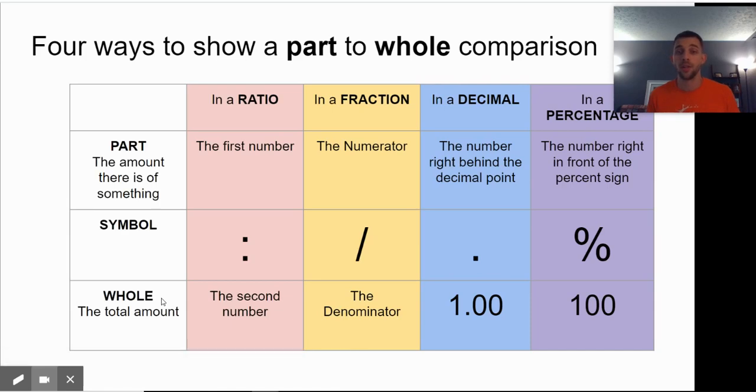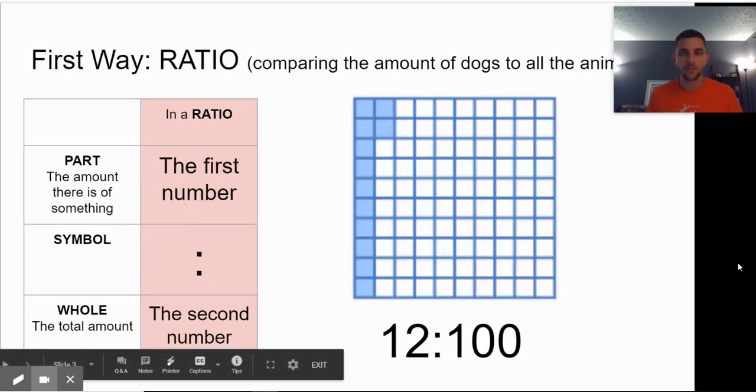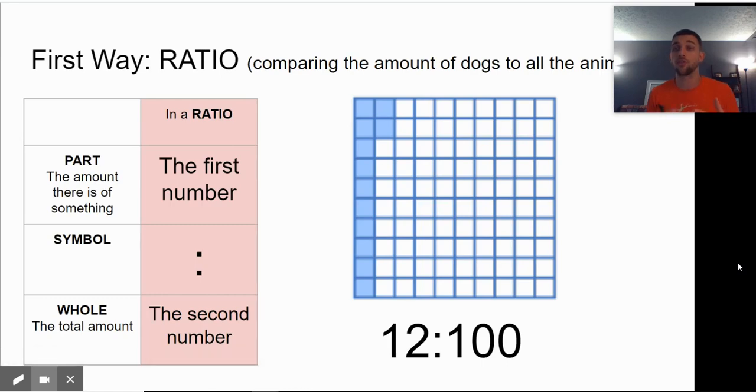Finally, the whole is going to be in a ratio the second number. In a fraction, it will be the denominator. In a decimal, it will always be one. And then in a percentage, it will be 100%. Let's first look at a ratio comparing dogs to animals.